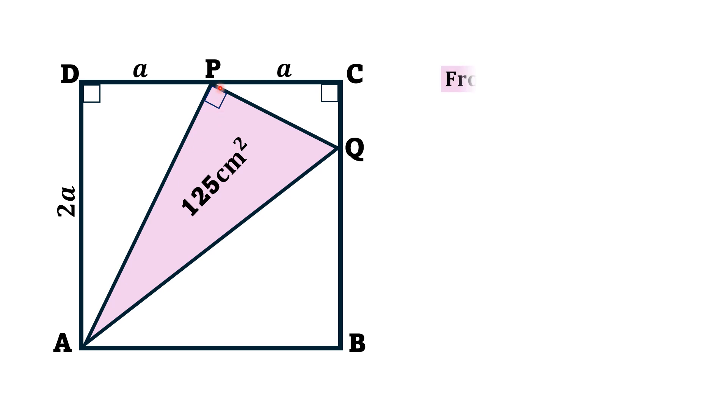Now, from triangle PDA, we have the length of legs of this triangle. One leg is a and the other leg is 2a. And PA is the hypotenuse, 90 degree angle is at point D. Then by Pythagorean theorem, we have PA square, that is hypotenuse, is equal to a square plus 2a square.